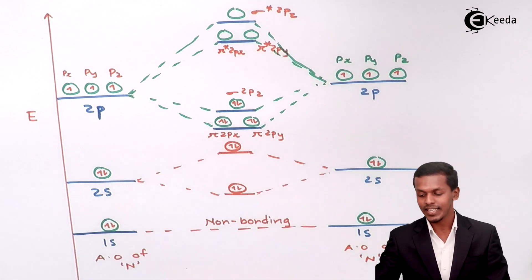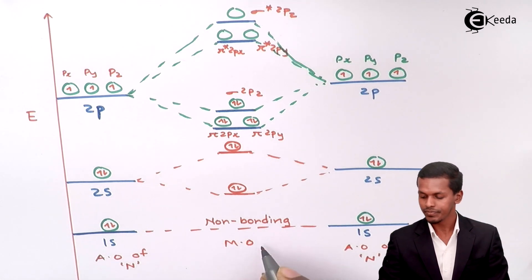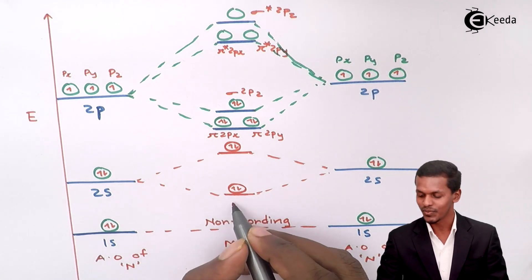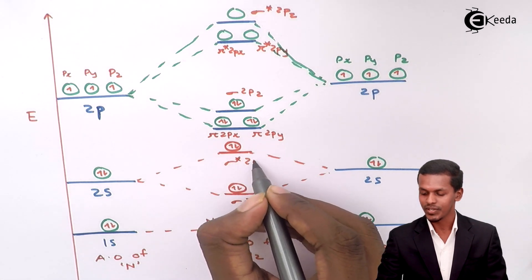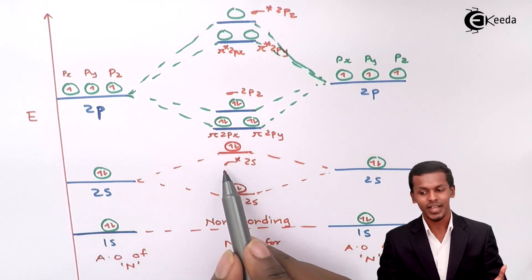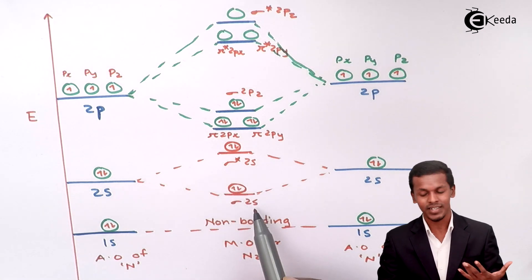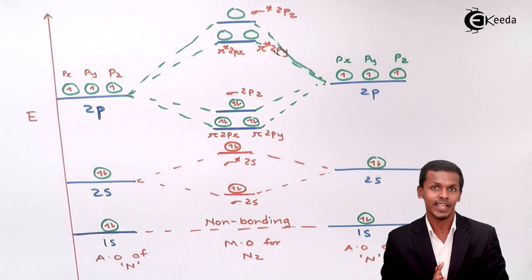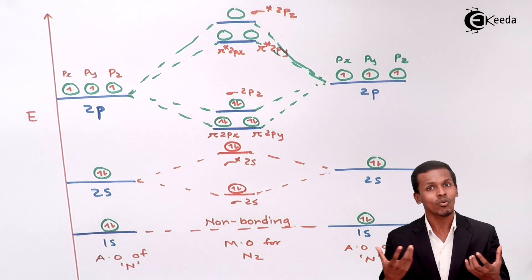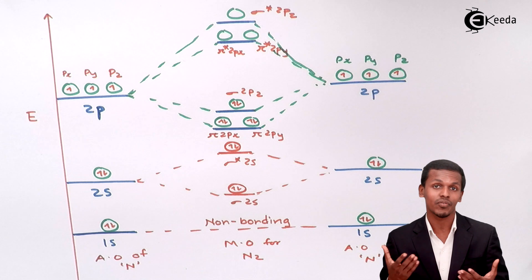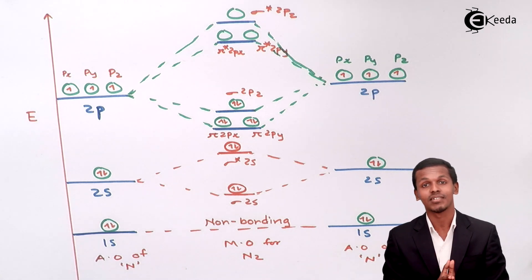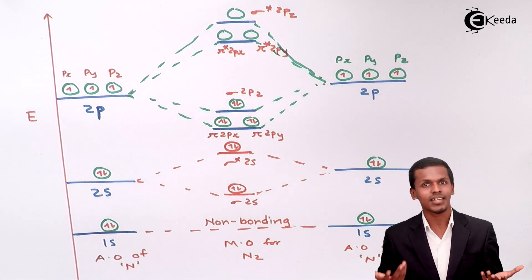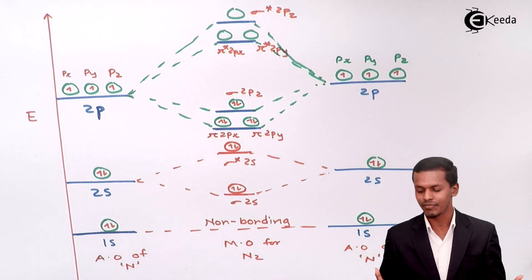This is the molecular orbital representation for the nitrogen molecule. Let me also designate the 2s molecular orbitals: this is sigma 2s and this is sigma* 2s. The s orbital is responsible for forming a sigma bond because of its spherical shape, which allows it to overlap in any direction, forming good head-on overlapping compared to the lateral overlapping of px and py, or the axial overlapping of pz.